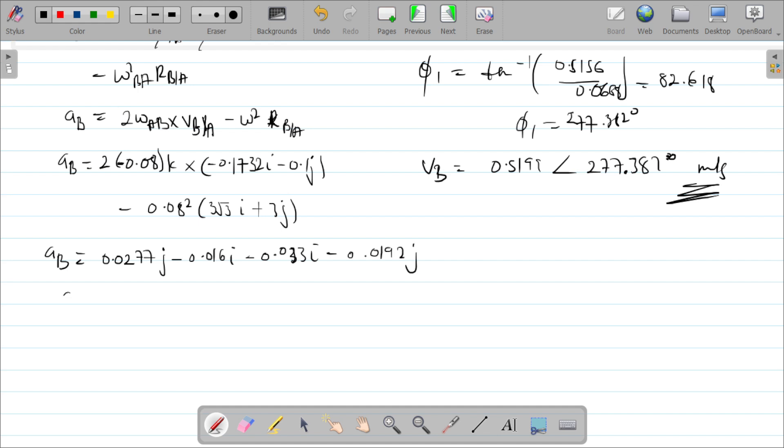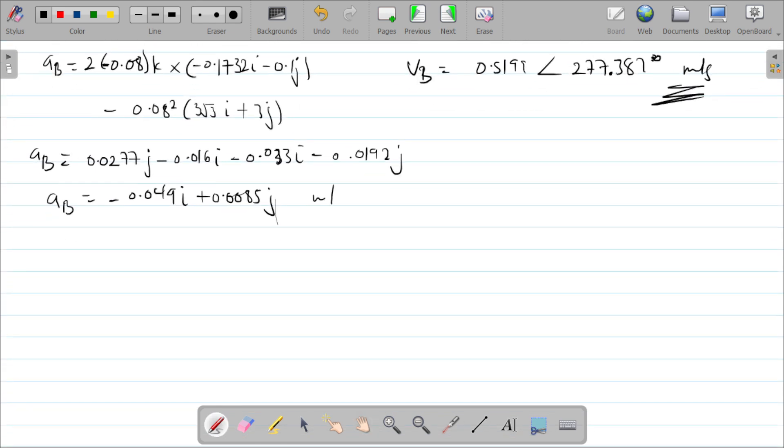Putting the i's together and j's together: 0.016 minus 0.033 gives minus 0.049i, and for the j's we have 0.0277 minus 0.0192, which is plus 0.0085j. So the acceleration of B is minus 0.049i plus 0.0085j meters per second squared. You can also express this as magnitude and direction like we did with velocity.